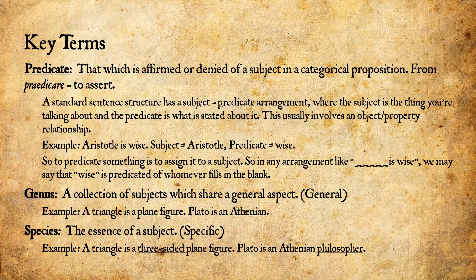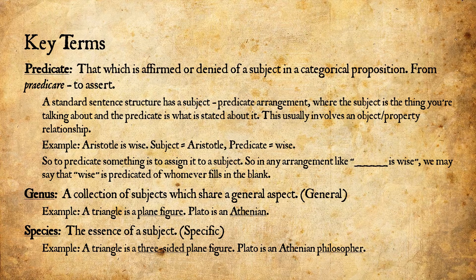To recap: 'predicate' is that which is affirmed or denied of a subject in a categorical proposition. The simplest way to predicate is to affirm with 'is' or deny with 'is not' — 'Aristotle is wise' predicates 'wise' of Aristotle, or 'Plato is not well-dressed' predicates by denial. 'Genus' is a collection of subjects which share a general aspect, related to generation and origin — for example, a triangle is a plane figure; Plato is an Athenian.